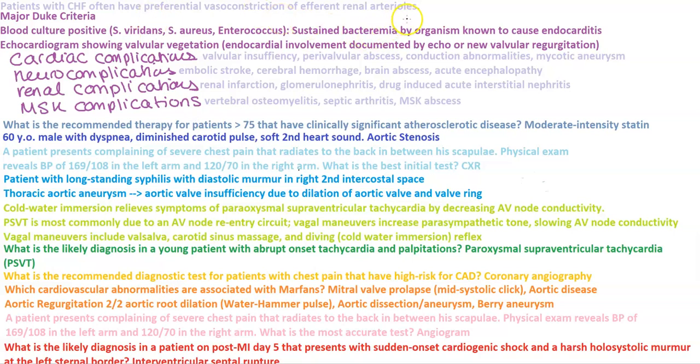First point: patients with CHF often have preferential vasoconstriction of the efferent renal arterioles. Patients with CHF are in edematous states. Remember edematous E and efferent E — that should help you remember that point.